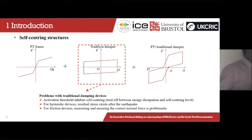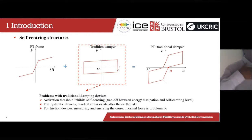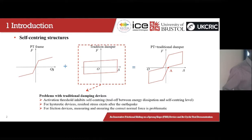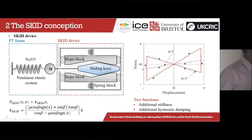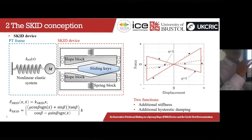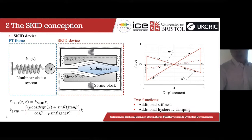Steel dampers will have residual stress after earthquakes, which may raise safety concerns for replacement workers. For frictional devices, maintaining and ensuring the correct normal force is problematic. We therefore proposed a new device with a triangular-shaped hysteretic curve. For this device, there is no activation threshold, no residual stress after earthquakes, and no need to provide a normal force during installation. This device provides two functions for the PT frame: additional stiffness and additional hysteretic damping.